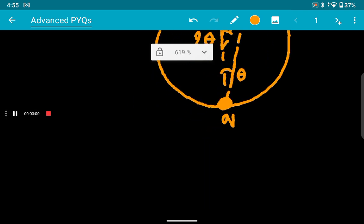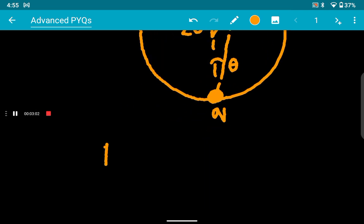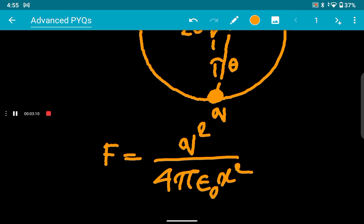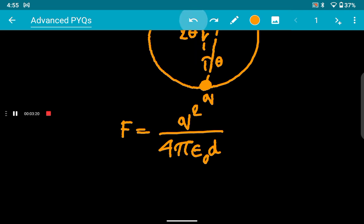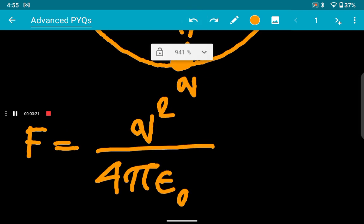What is this distance? The force is nothing but q squared divided by 4πε₀x², where x is the distance. Let's write x squared here because we will need x.